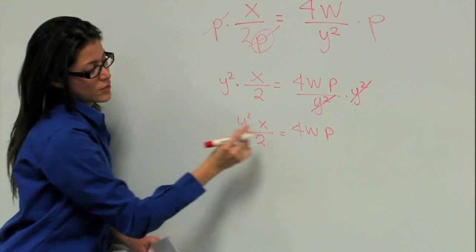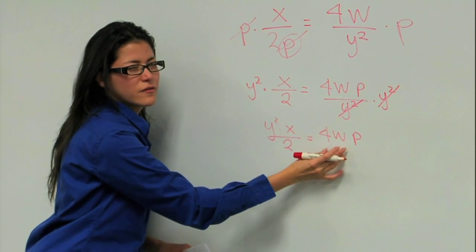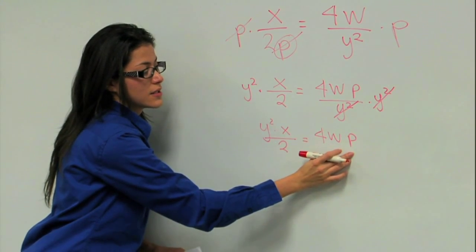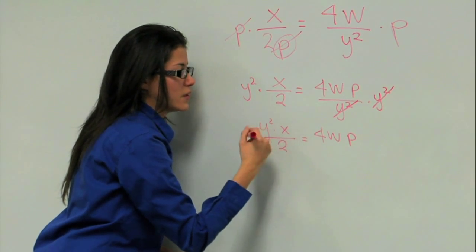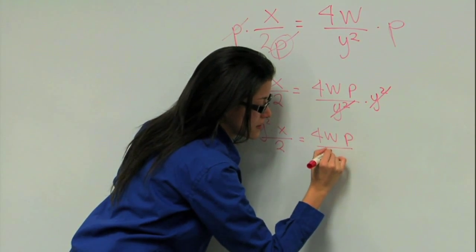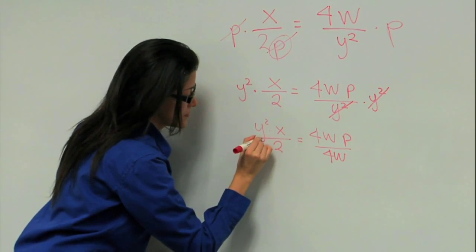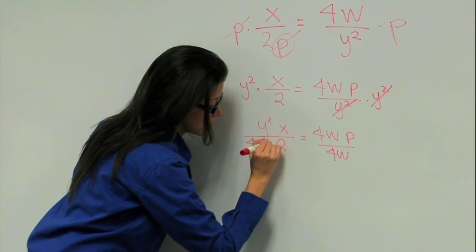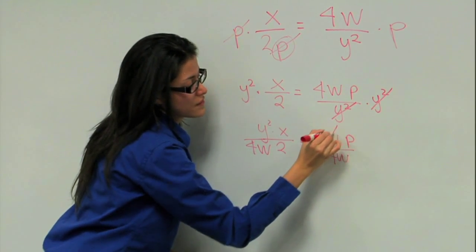Now, we need to get rid of the 4W. How do we get rid of the 4W? If it's multiplying, we have to divide by 4W. Again, on both sides. So we divide by 4W. That way we cancel it from here.